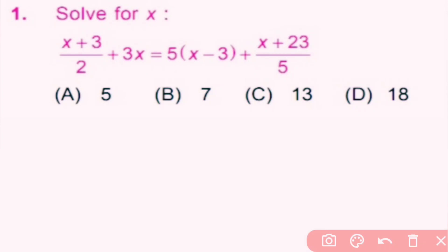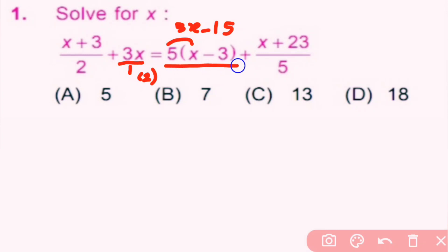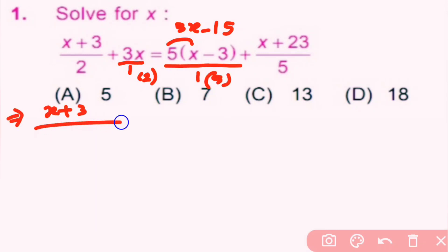We need to find out the value of x. We first solve the bracket: 5 into x is 5x, minus 5 into 3 is 15. Now for addition their denominators are different, so we will make them the same by multiplying numerator and denominator — here by 2 and here by 5. So x plus 3, now their denominator is 2, plus 3x into 2.